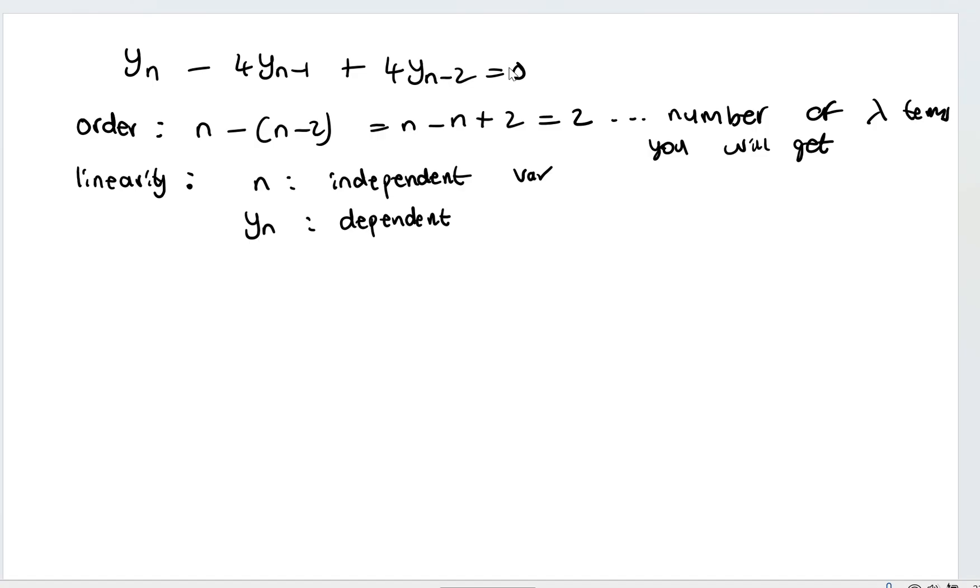So an example of non-linear is if we have something like y_n multiplied to y_n or if we have y_n raised to some power 3. So overall, it is linear. Why? Because the dependent variable appears only once in each term.